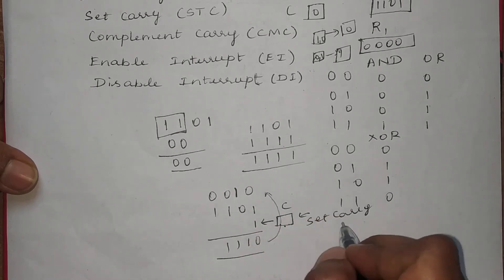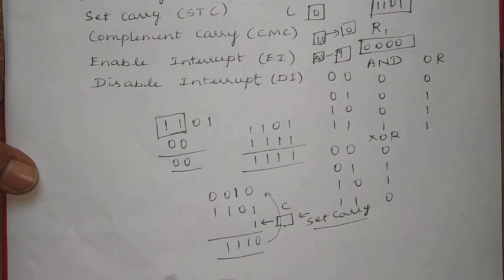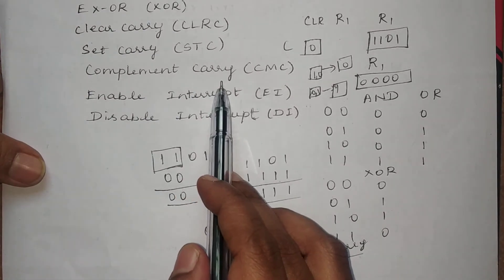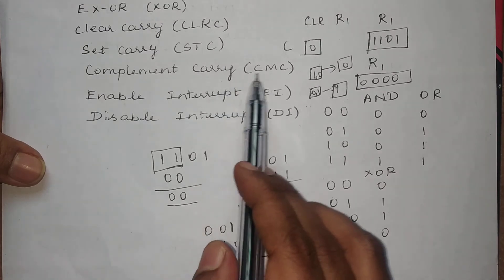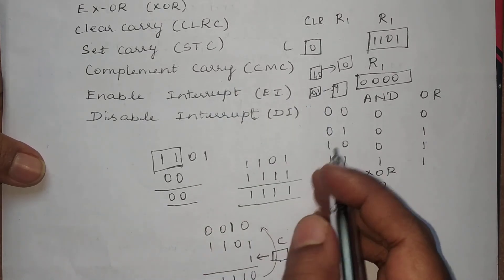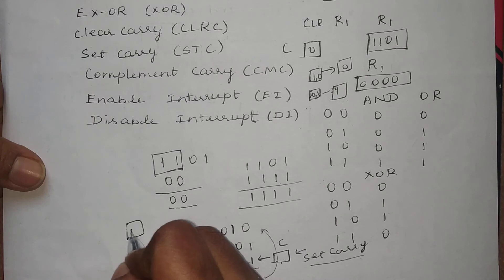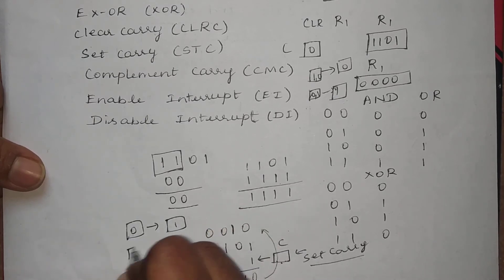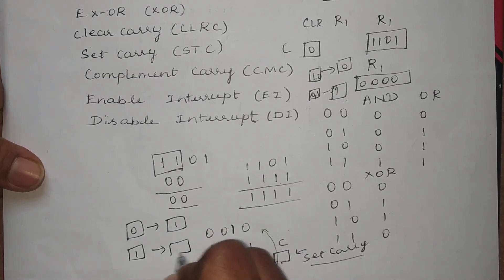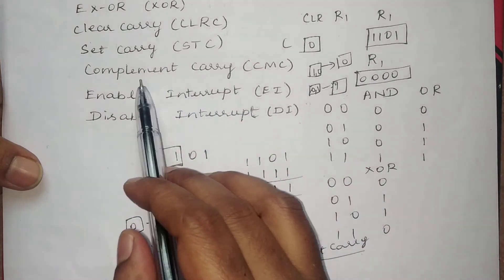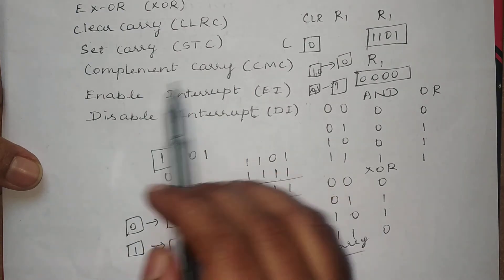The next instruction is complement carry. Whatever the current carry value is, it will be complemented. If the carry value is 0, it will be complemented to 1; if the value is 1, it will be complemented to 0. This is how the complement carry operation works.